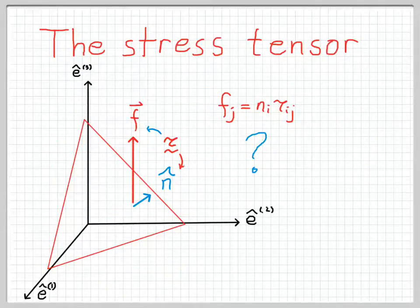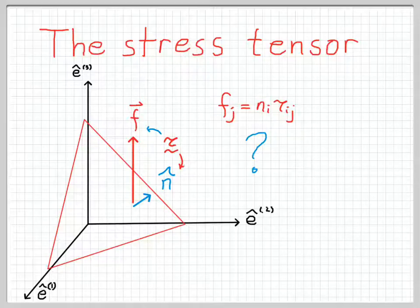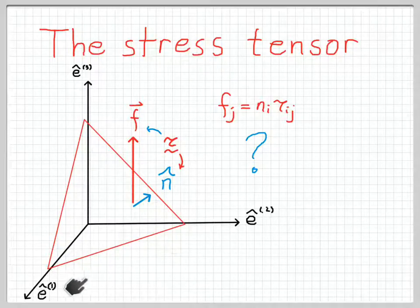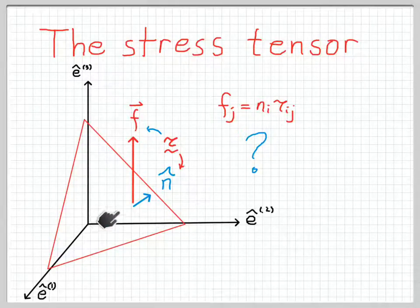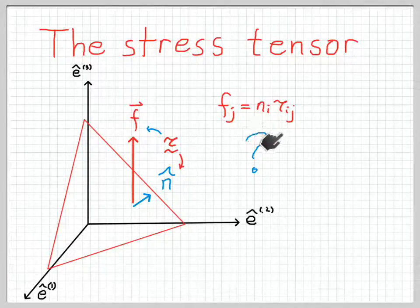An equivalent way to phrase the question is to suppose that instead of looking at a coordinate plane, we look at some arbitrary surface that is canted at some angle and cut through the material. So we leave the Cartesian coordinate directions alone, but instead of asking about forces on a coordinate plane perpendicular to the coordinates, we'll ask about the forces on some arbitrary plane, and try to determine whether or not they are described by the stress tensor in the way that it works on coordinate planes.